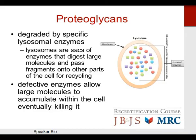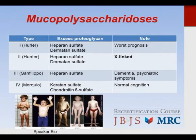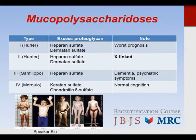Proteoglycans are degraded by lysosomal enzymes. Defective enzymes allow large molecules to accumulate within the cell, eventually killing it. This brings us to mucopolysaccharidoses — lysosomal enzyme deficiencies. Proteoglycan byproducts accumulate, creating a progressive clinical picture with increasing mental challenges except for Morquio syndrome. The four commonly tested types are types 1 through 4. Type 2 (Hunter syndrome) is notable as X-linked in inheritance. Type 4 (Morquio syndrome) is the most common and has normal cognition.